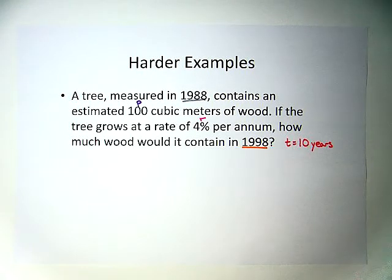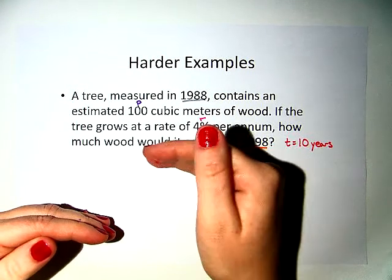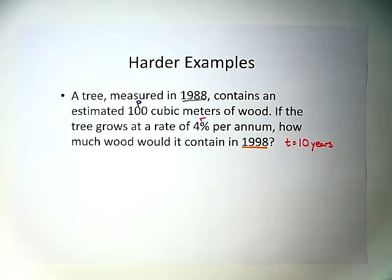So we have P, we have R, we have T, and now we need to decide: do we use simple summative amount, or do we use compound summative amount? Now, the way that trees work is trees do not grow at an equal amount every year. They build on each other creating the rings.